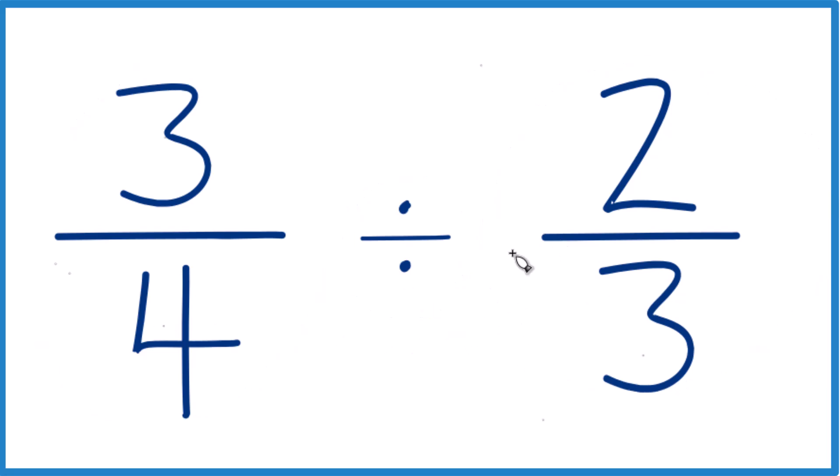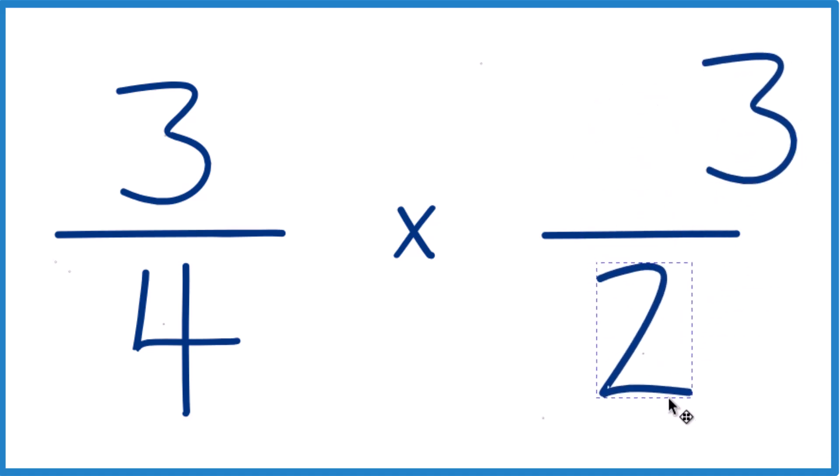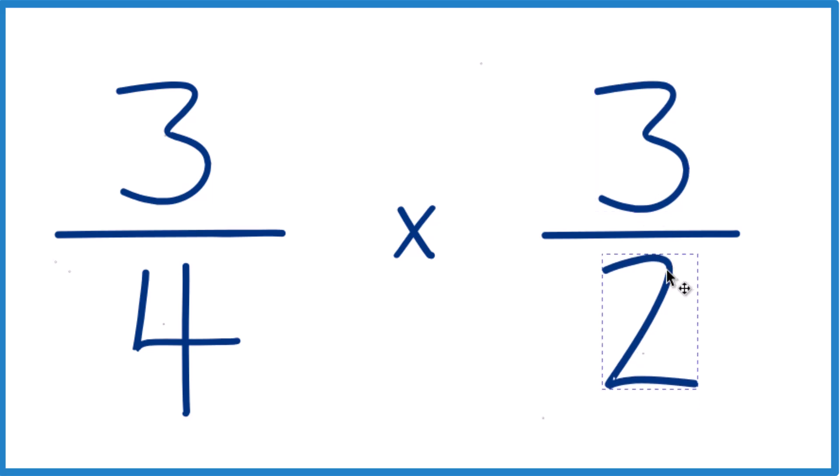So when we're dividing fractions, instead of division, it's easier to call it multiplication. As long as we take the inverse here, or the reciprocal, of two-thirds, that means we move the three up to the top and the two to the bottom. That's the reciprocal, sometimes called the multiplicative inverse.